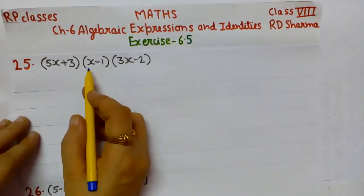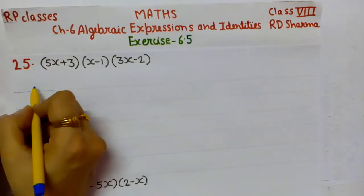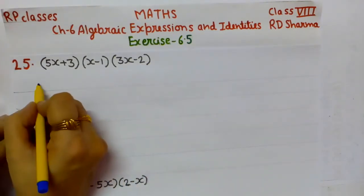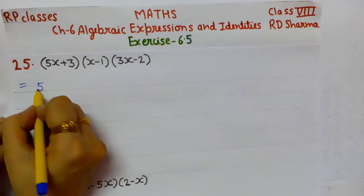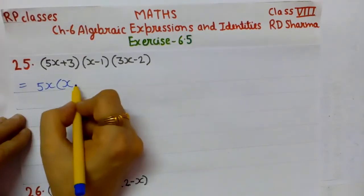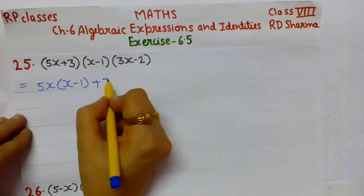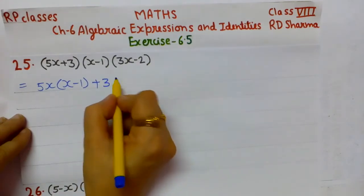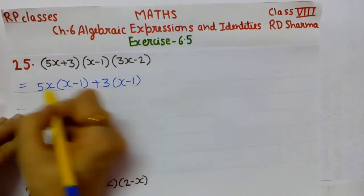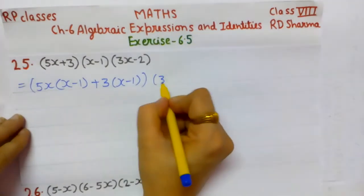We apply the distributive property. First, we break the first bracket: 5x multiplied by (x - 1), plus 3 multiplied by (x - 1), and the third bracket remains as it is.